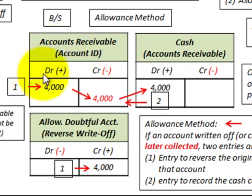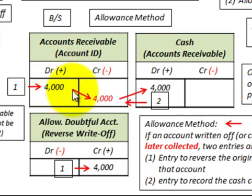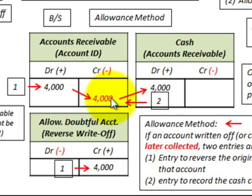For entry one, we reverse the original write-off by debiting accounts receivable for $4,000, and the credit goes to allowance for doubtful accounts for $4,000. For entry two, we credit accounts receivable for $4,000 to clear it out, and the debit of $4,000 goes to our cash account. So we increase cash by $4,000. All of this transpires on the balance sheet.